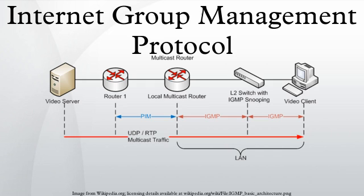The Internet Group Management Protocol is a communications protocol used by hosts and adjacent routers on IP networks to establish multicast group memberships. IGMP is an integral part of IP Multicast. IGMP can be used for one-to-many networking applications such as online streaming video and gaming, and allows more efficient use of resources when supporting these types of applications. IGMP is used on IPv4 networks.